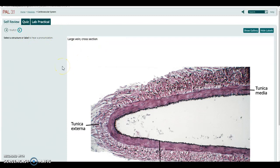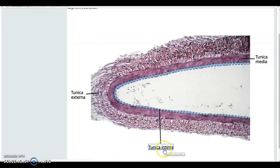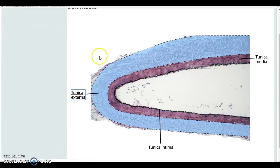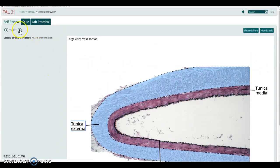This is a vein now, of course, it doesn't hold its shape because it doesn't have the thick outer tunica externa. The tunica intima, the internal lining and that tunica media not nearly as thick as in an artery because you just don't have the high pressure that you do in an artery.